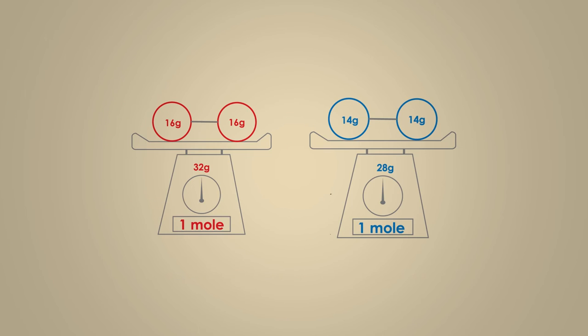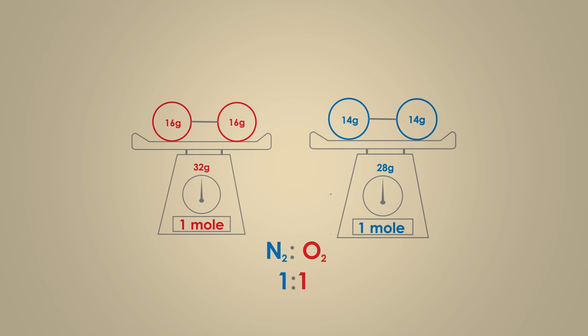You should have found that 28 grams is 1 mole of nitrogen, and that 32 grams is 1 mole of oxygen. The ratio of moles is 1 to 1, so the product is NO.